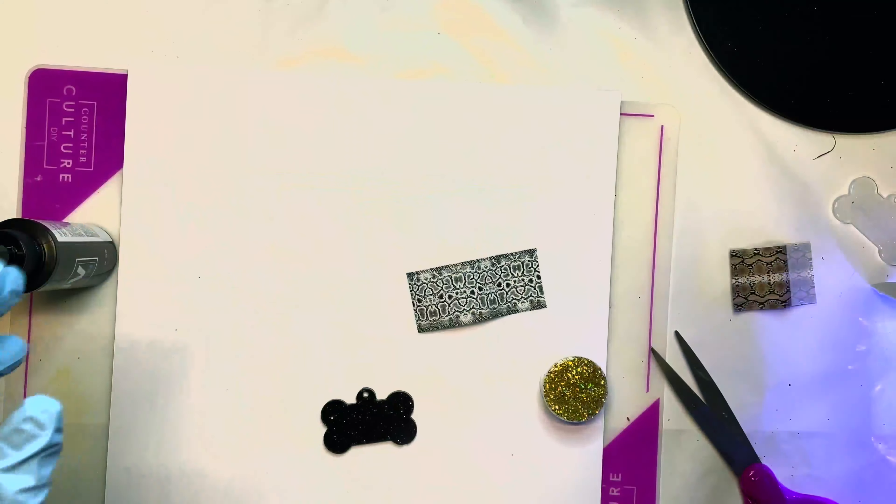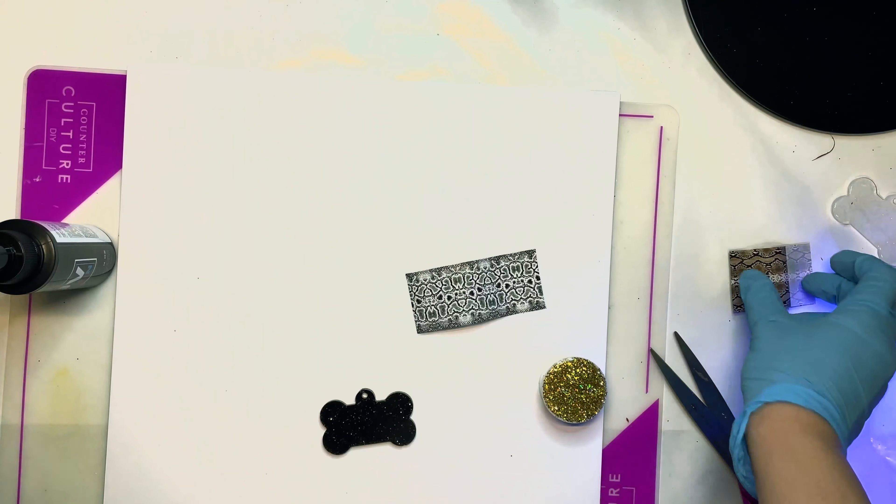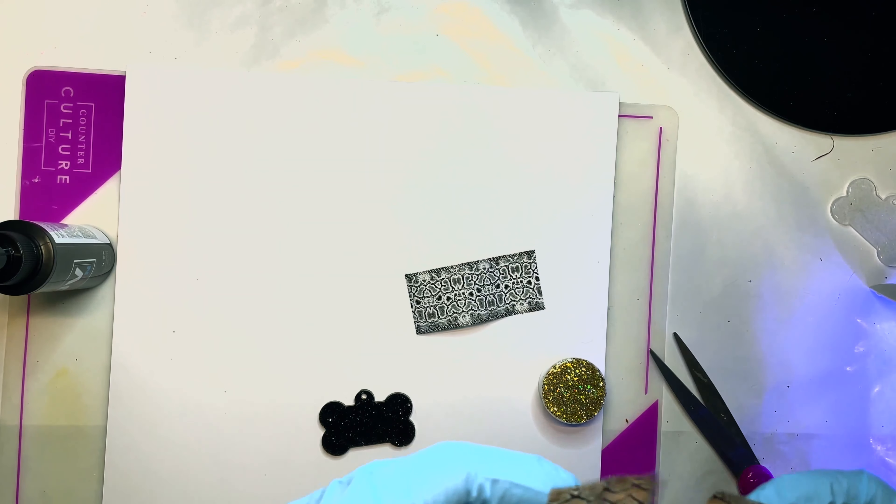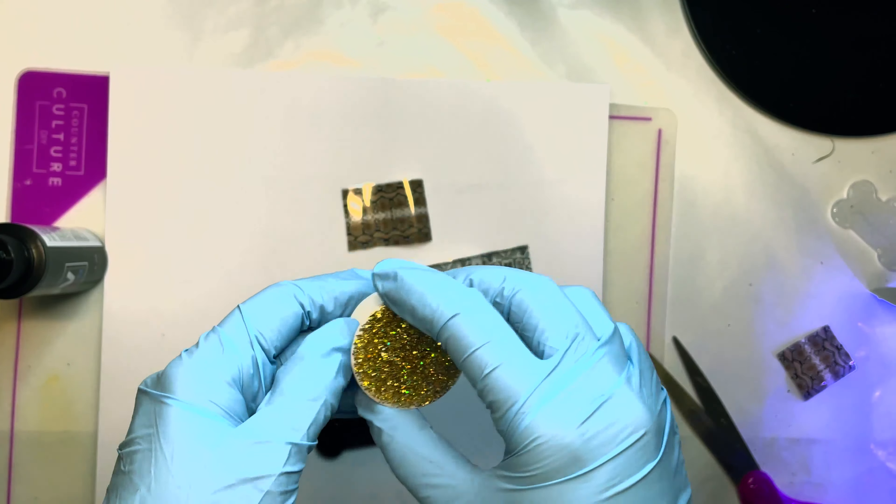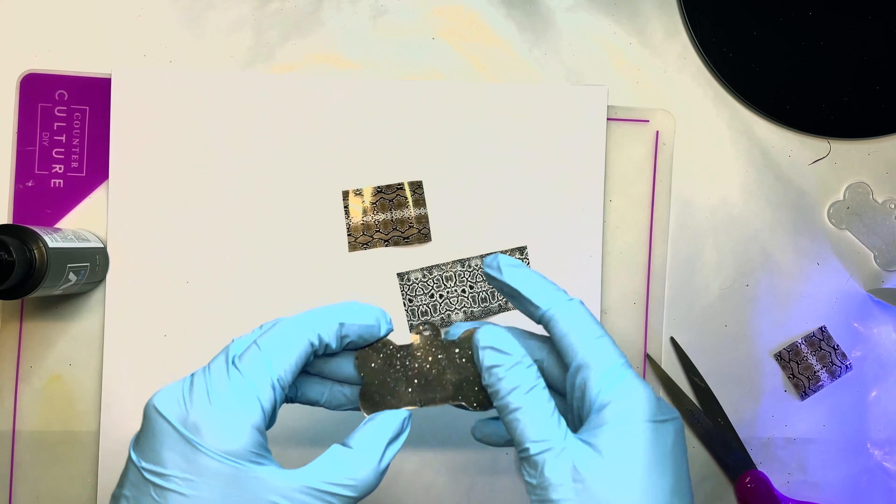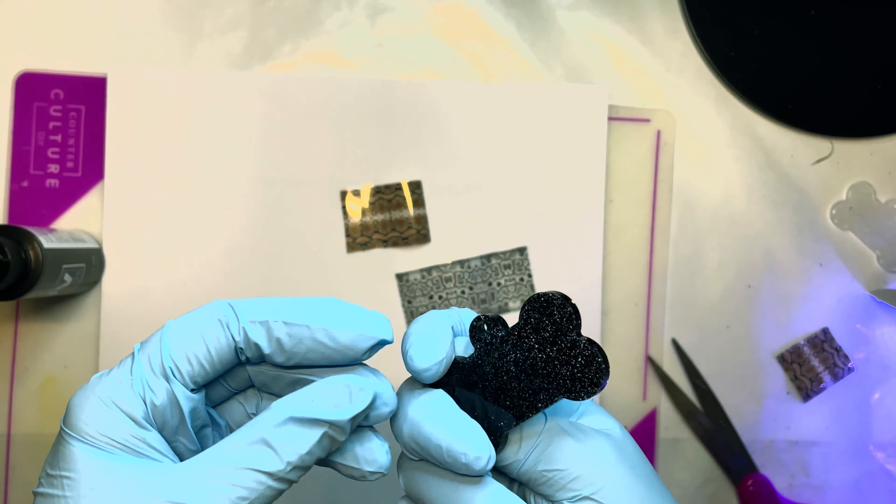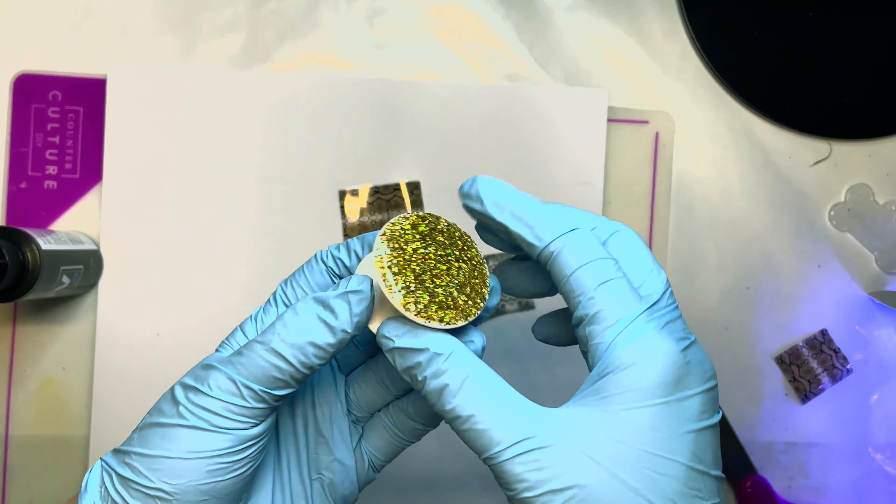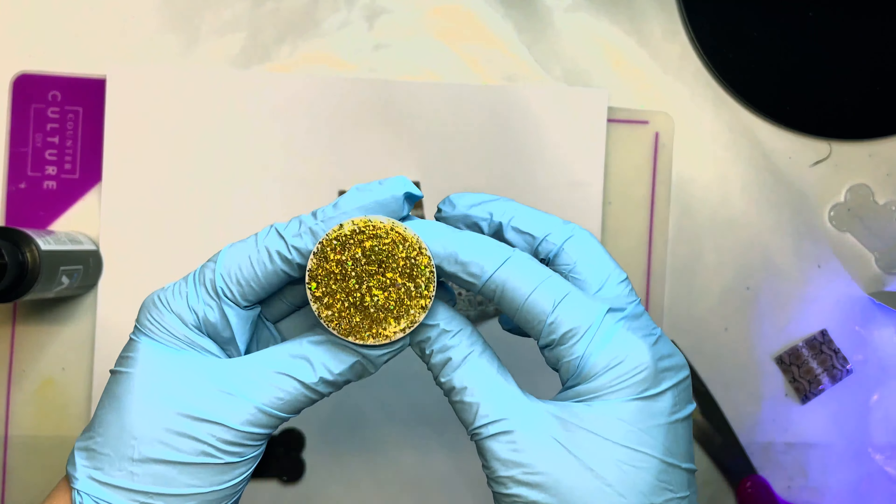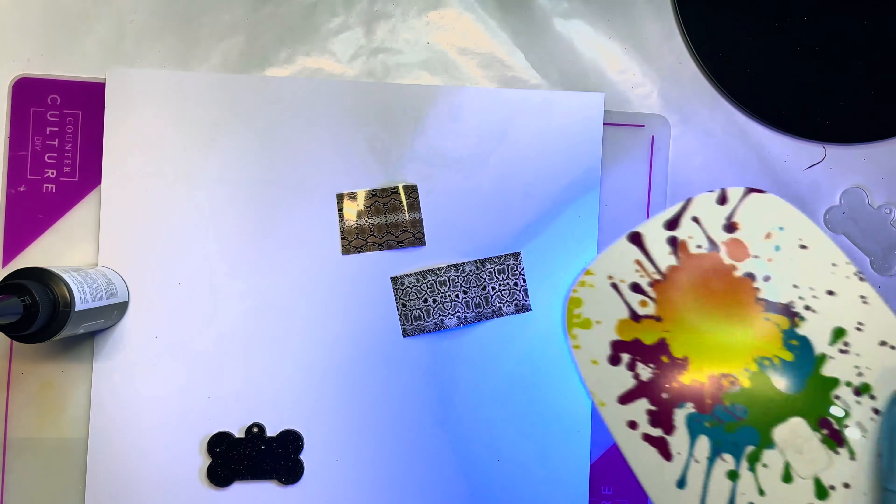You can buy them in sheets or in these little cases on Amazon. They're called nail foils. A bunch of different glitter suppliers carry the big sheets. These are just what I'm going to use today. I'm going to show you how to add some accents to a phone grip and a dog tag, so let's get right into it.